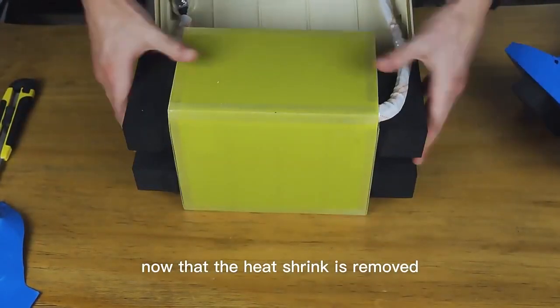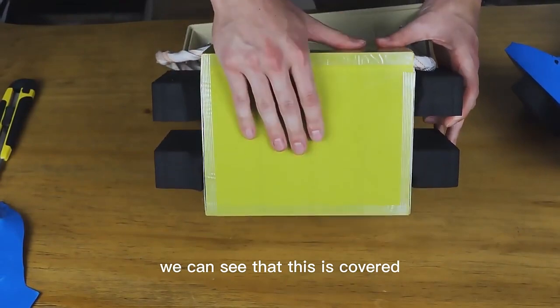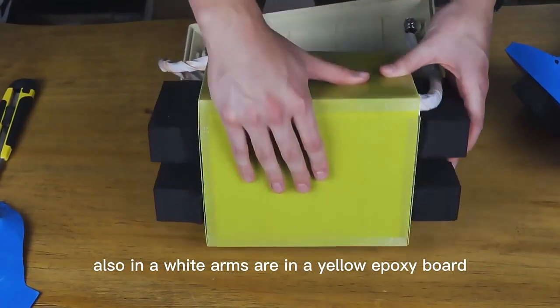Now that the heat shrink is removed, we can see that this is covered also in a yellow epoxy board.